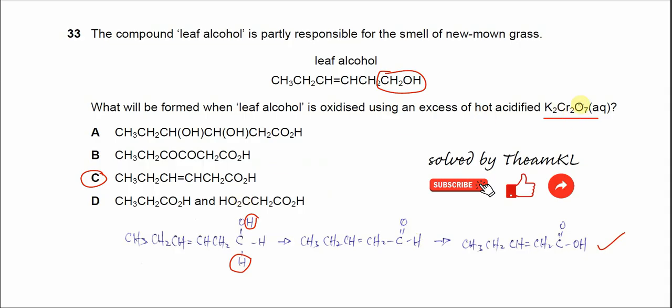Just remember, potassium dichromate will oxidize the alcohol only. It cannot oxidize the C=C double bond.